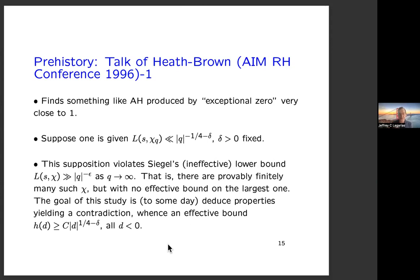I'd like to discuss the prehistory of the alternative hypothesis, some of which appears in a talk by Heath-Brown given at the AIM Riemann Hypothesis conference in 1996. This talk is available as a video recording on the web posted by AIM. Heath-Brown never wrote the paper, so what we have is just the talk, which finds something like the alternative hypothesis produced by the exceptional zero.